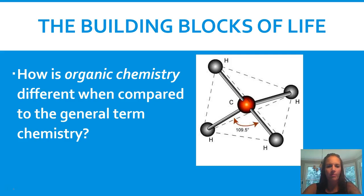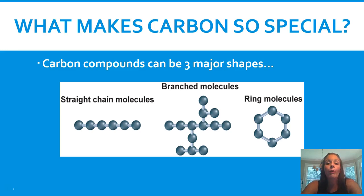First up, organic chemistry is the term used to refer to the study of macromolecules. Why is it different than regular chemistry? Organic chemistry is about carbon. What makes carbon so special? Carbon can be in three major shapes: it can be straight, it can be a branched molecule, or it can form rings.